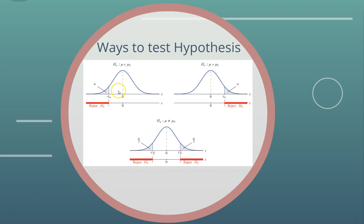You place your z-statistic on this distribution. If it falls in the acceptance region, you accept the null hypothesis. If it falls in the grayed-out rejection region, you do not have enough evidence to accept the null hypothesis and therefore accept the alternative hypothesis. For a right-tailed test, you accept H₀ if the statistic falls below the critical value from the z-table, and reject it if it falls outside. For a two-tailed test, there are rejection regions on both sides — if the statistic falls in the acceptance region you accept H₀; if it falls in either rejection region you reject it.